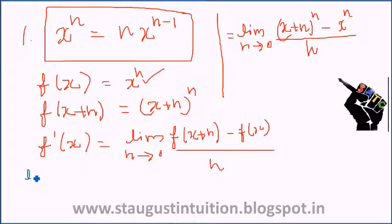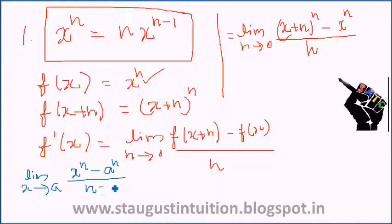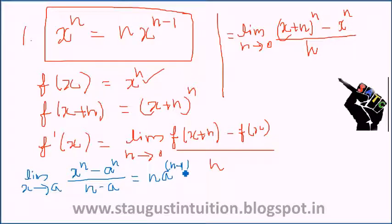We apply the standard limit formula: limit as x tends to a of (x raised to n minus a raised to n) divided by (x minus a) equals n times a raised to n minus 1.